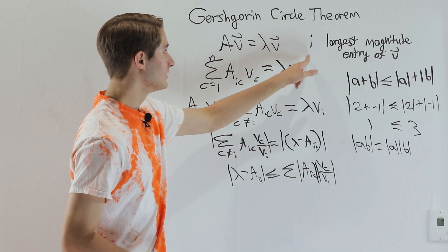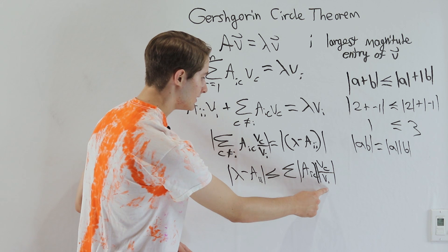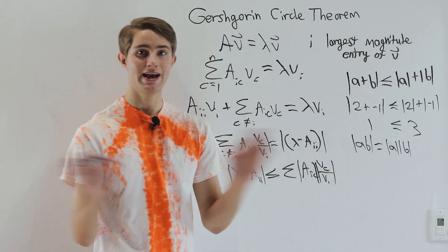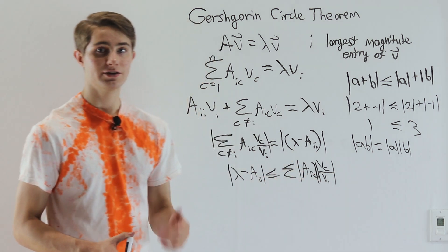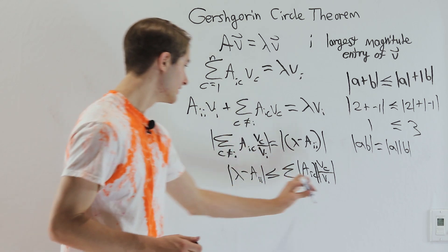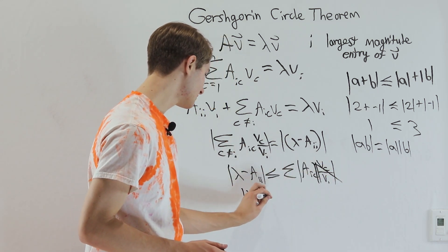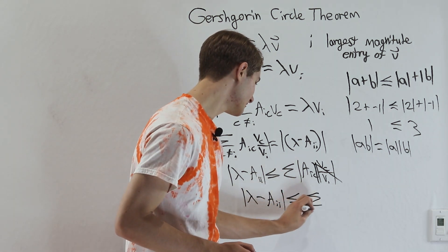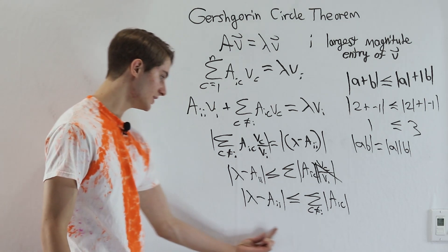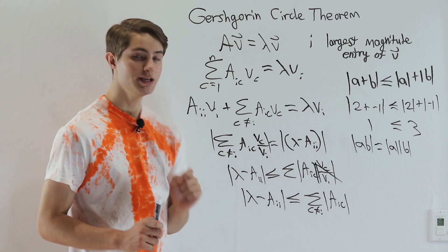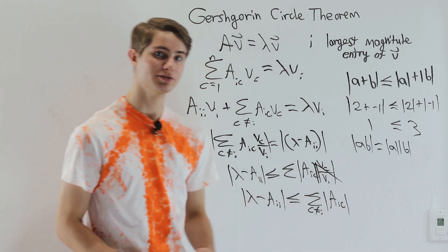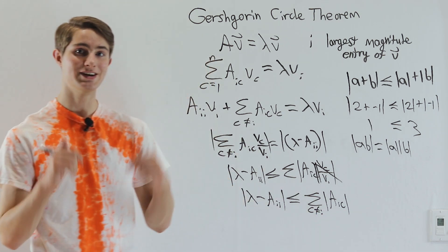Here's the reason we chose i to be the largest magnitude entry: V_i is the entry of V with the largest magnitude, so V_i is always greater than or equal to V_C for any value of C, meaning |V_C / V_i| is less than or equal to 1 for every entry. Because we already have an inequality, we can drop that factor and conclude: the absolute value of lambda minus A_ii is less than or equal to the sum with C not equal to i of |A_IC|. This is our final statement describing the Gershgorin disks — each disk is centered at diagonal entry A_ii with radius equal to the sum of absolute values of the non-diagonal entries in that row.